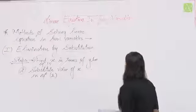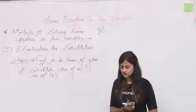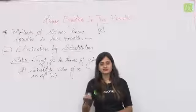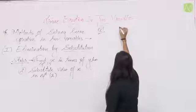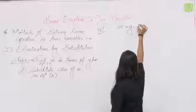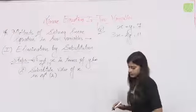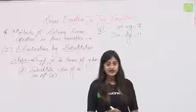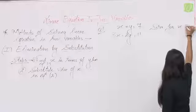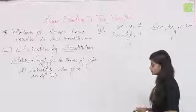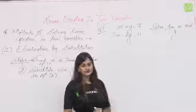अगर question में mention है — 'solve by substitution method' या 'solve by elimination method' — तो उस method से solve करना है। सबसे पहले substitution method use करते हैं। First question है: x + y = 7 and 2x − y = 11। इसमें हमें x और y की value find करनी है substitution method से।